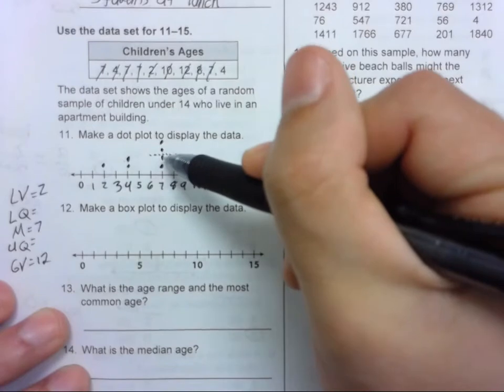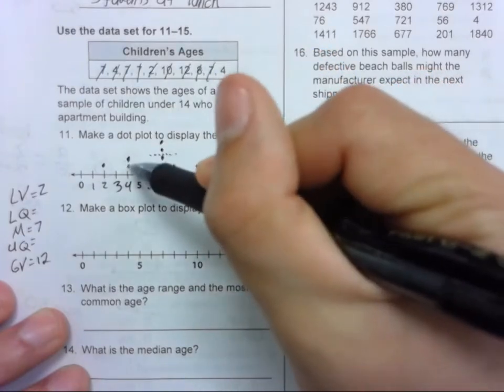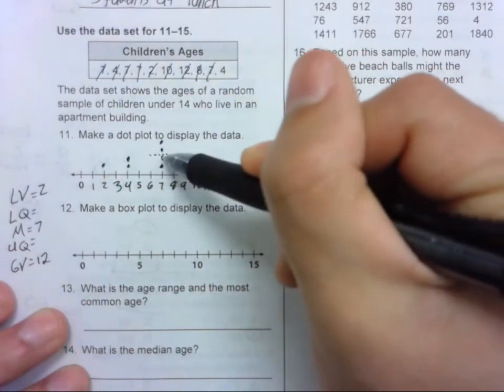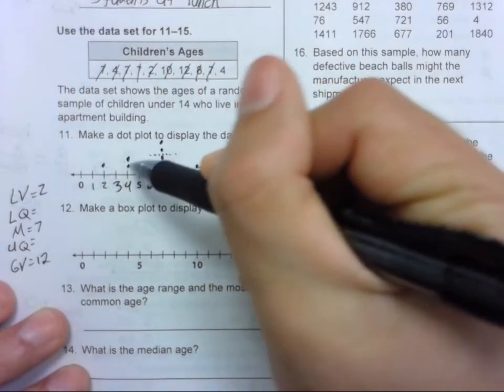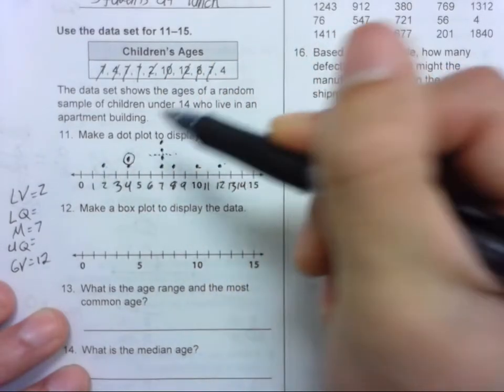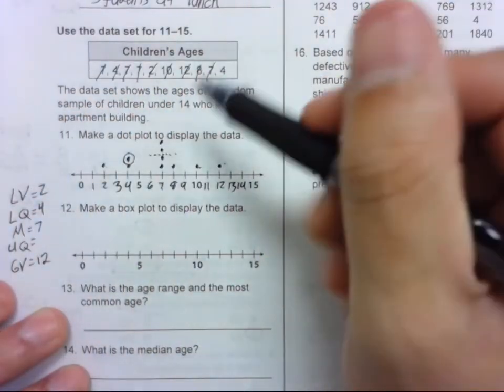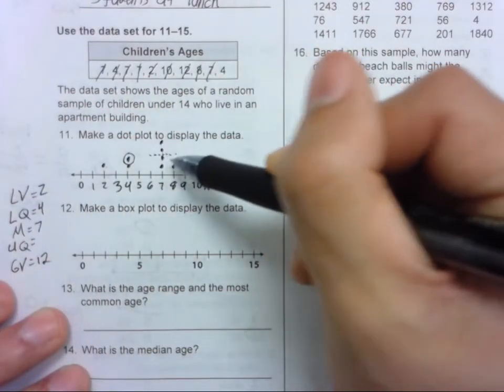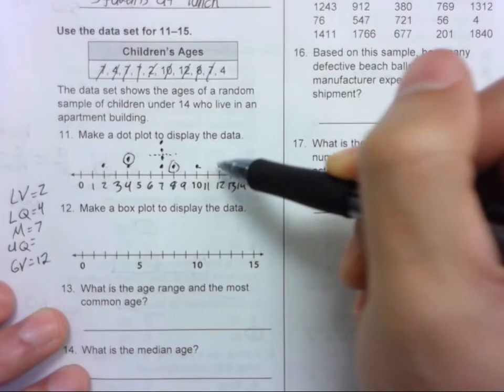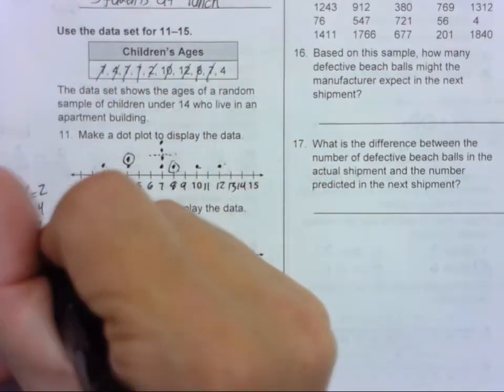So now we have 1, 2, 3, 4, 5 data points smaller. That's good. So 1, 2, 3. There's our lower quartile, and that is 4. Our upper quartile is 1, 2, 3. Should be 2 more. Good. So our upper quartile is 8.